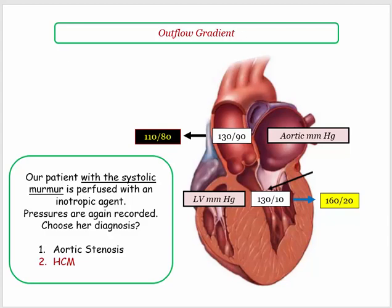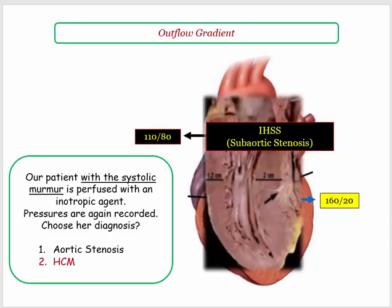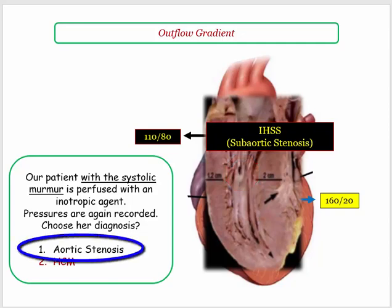Introducing the older term IHSS: the patient has subaortic stenosis, with stenosis being the operative phrase. In the face of an inotrope, they have a dynamic degree of obstruction reflected in lower aortic pressures compared with the left ventricle. Insofar as aortic stenosis, with a rise in pressures, might be dampened compared to normal, it would not cause a drop in systemic pressure.